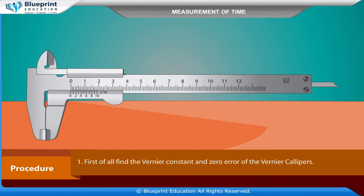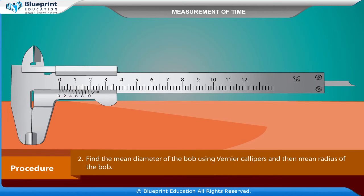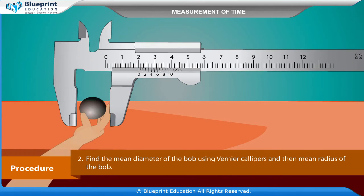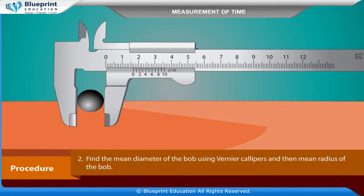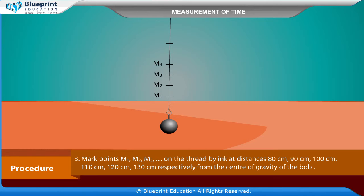First of all, find the vernier constant and zero error of the vernier calipers. Find the mean diameter of the bob using vernier calipers and then the mean radius of the bob. Mark points M1, M2, M3 on the thread by ink at distances 80 cm, 90 cm, 100 cm, 110 cm, 120 cm, and 130 cm respectively from the center of gravity of the bob.